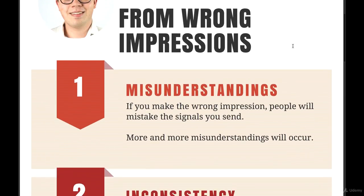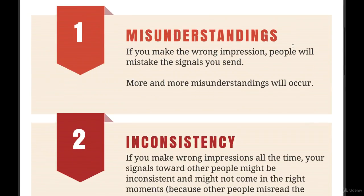The first problem that derives from the wrong impressions is misunderstandings. If you make the wrong impression, people will mistake the signals you send, and more and more misunderstandings will occur. For instance, if you always make the wrong impression and you seem happy but you're actually sad, or you seem sad but you're actually happy, that leads to misunderstandings. If you seem angry and no one wants to talk to you, but you're actually happy and want to talk to everyone, there are going to be misunderstandings.